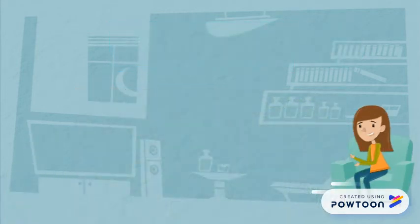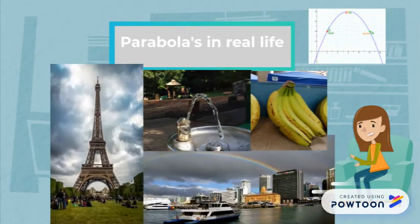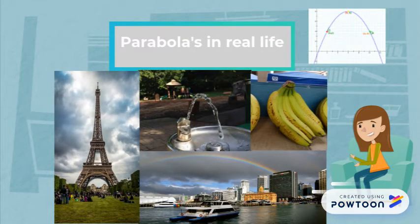You can find parabolas in the bottom of the Eiffel Tower, the arc of a water fountain, bananas, or even a rainbow.